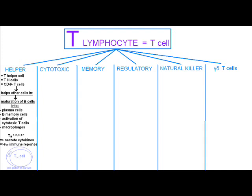There are different subtypes: TH1, TH2, TH3, TH17. What does the T helper cell exactly do? It secretes cytokines for immune response. The T helper cell has a CD4 protein on its surface.